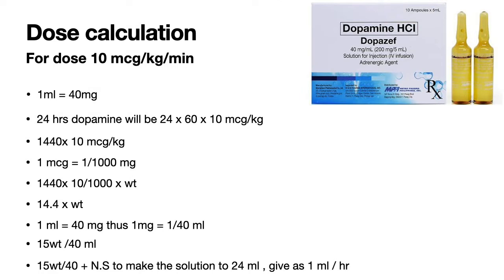For the dose calculation of dopamine at 10 microgram per kg per minute: the 24-hour requirement is 24 × 60 × 10 = 1440 × 10. Since 1 microgram equals 1/1000 of a milligram, this comes out to 14.4 times the weight. As 1 ml ampoule contains 40 mg of dopamine, the net amount in ml needed for 24 hours is 15 times the weight divided by 40. Add this to normal saline to obtain a 24 ml solution and run at 1 ml per hour to get a 10 mcg dose rate.